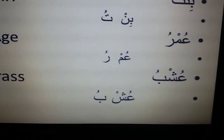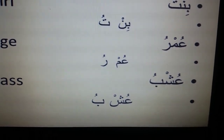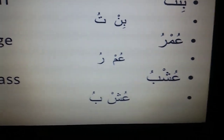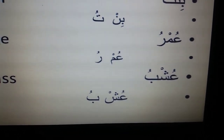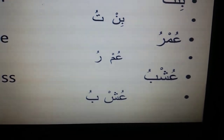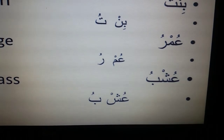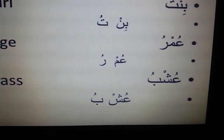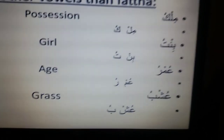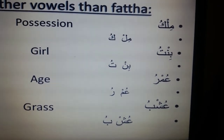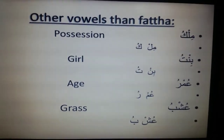The last example, ushbu, meaning 'grass', also consists of three letters: ayn, sheen, and ba. Ayn has a dhamma so it becomes 'u', sheen becomes 'sh', giving 'ush'. Then ba with a dhamma gives 'bu', so ushbu. To recap: milku means 'position', bintu means 'girl', umru means 'age', ushbu means 'grass'.